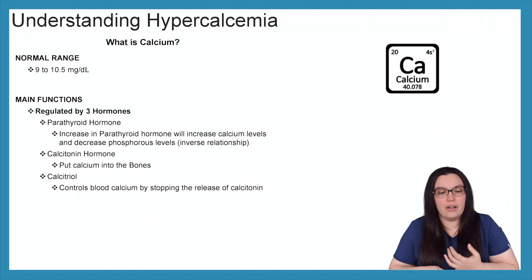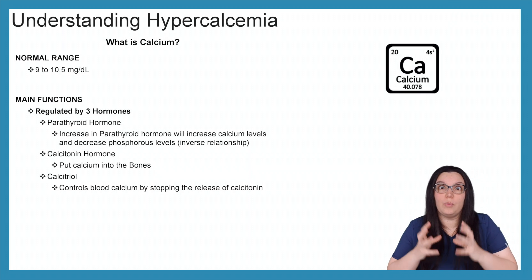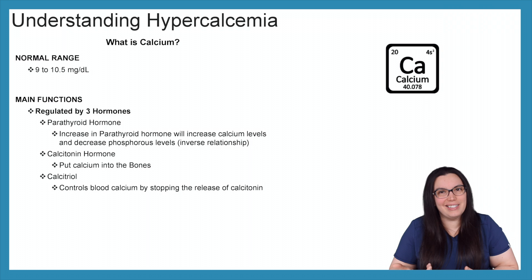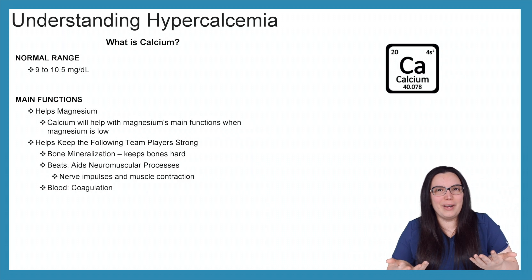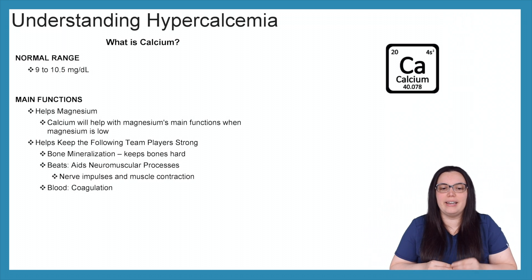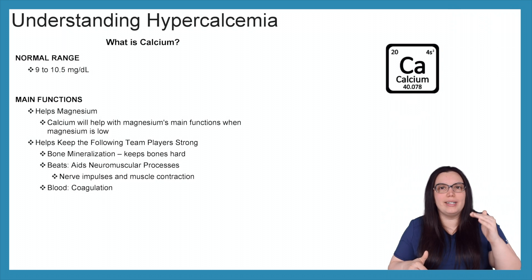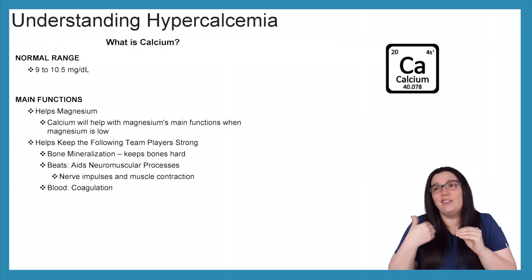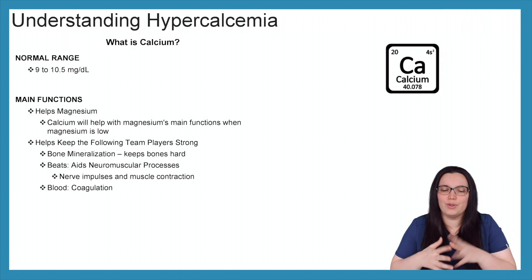Another hormone that calcium regulates is calcitonin, and what calcitonin does is it puts calcium into our bones — we want that calcium in our bones. And then lastly, it regulates calcitriol, which ultimately controls blood calcium by stopping the release of calcitonin. A couple more main functions: calcium helps magnesium, stepping up for its best friend when magnesium is low and helping with all of the functions that magnesium would normally have. Remember, magnesium and calcium are best friends, and they're not really good friends with phosphorus — that's why they have that inverse relationship.